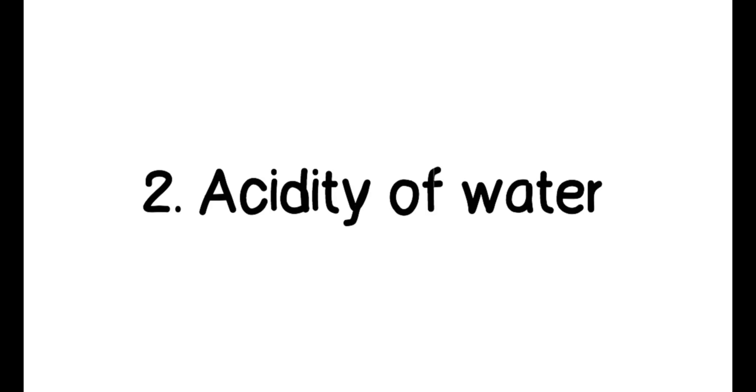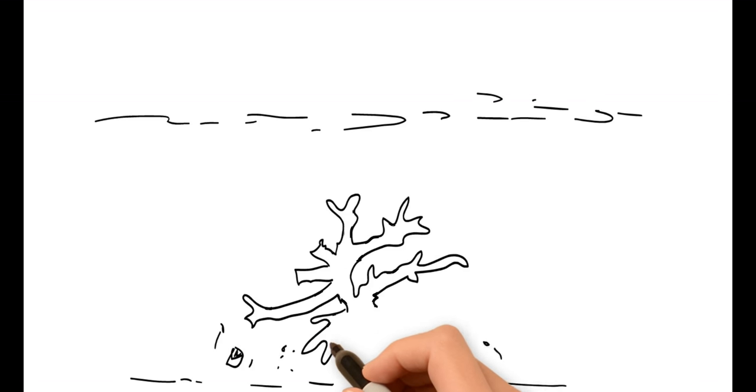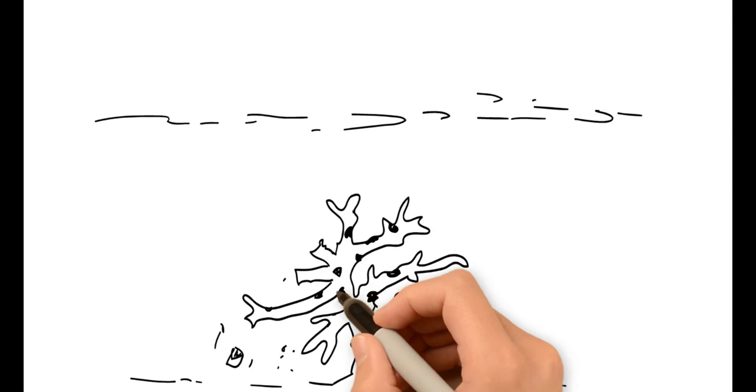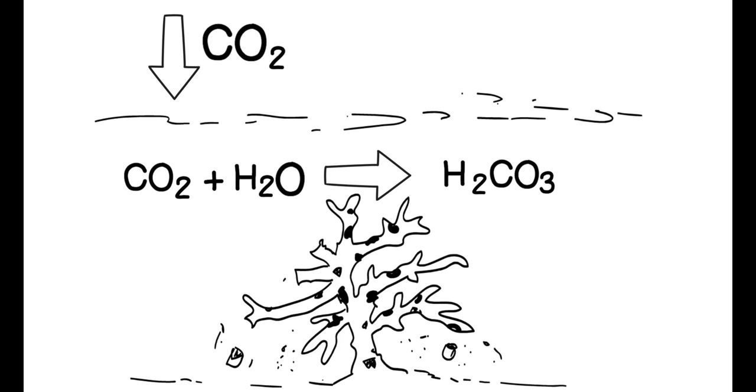2. Acidity of water. When carbon dioxide dissolves in water, carbonic acid is formed. Carbonic acid is a weak acid, but in large enough concentrations, it can affect even the acidity of oceans.